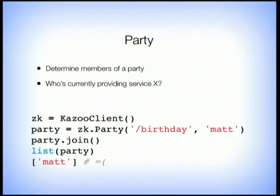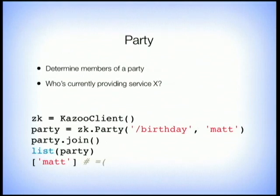Party is another very powerful feature — it determines party membership. For example, who's currently providing service X? We could use this with MySQL to have a well-known location identifying each of our read slaves. You construct a party object with the well-known path and optionally a client identifier, then you join the party. If we list the party, sadly it's only me at the birthday party.